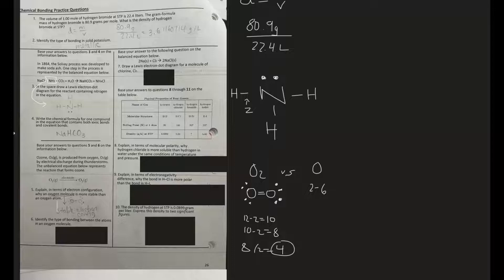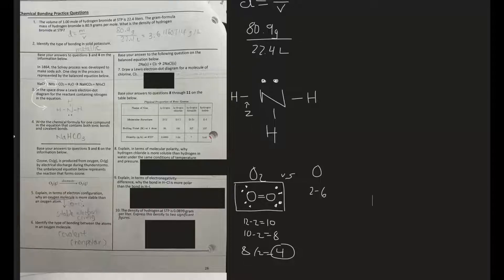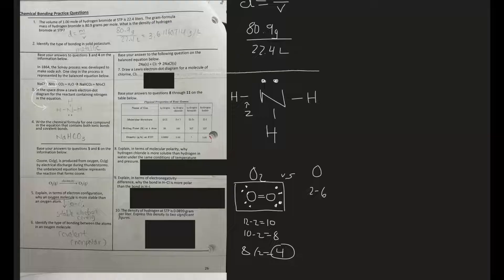Number six: Identify the type of bonding between the atoms in the oxygen molecule. You can see right here it's covalent bonds, so it is covalent bonding. And it's also non-polar because it's the same atom. Number seven: Draw a Lewis electron dot diagram for a molecule of chlorine.